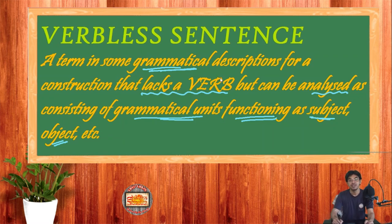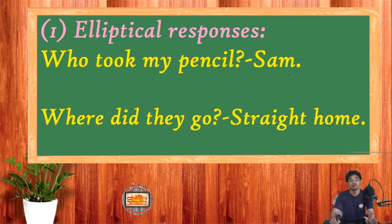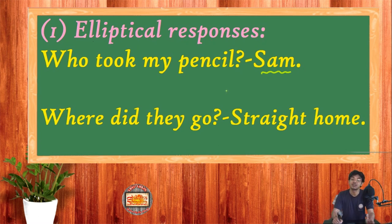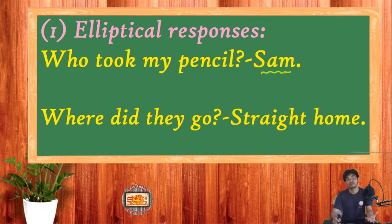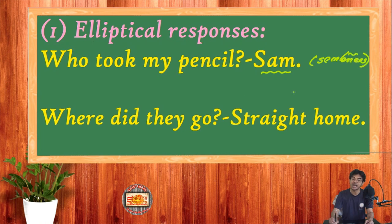Let's have some examples to see how we use them in daily English. First: elliptical responses. We ask questions like 'Who took my pencil?' and the answer is 'Sam.' Is this a sentence or not? It actually means 'Sam took my pencil,' but in daily English we don't say the full form. We just say 'Sam' — there's no verb, yet it is a sentence. It's a verbless sentence.